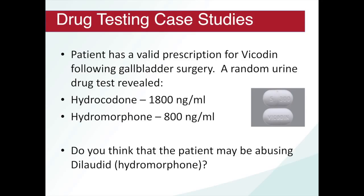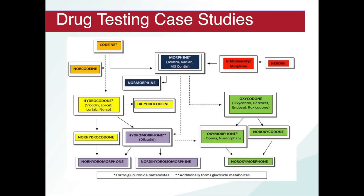Here's a case in point: a prescription for Vicodin was given to a patient following gallbladder surgery. The patient underwent a random test sent for confirmation, which shows hydrocodone and hydromorphone in the urine. Do you think the patient might be abusing Dilaudid (hydromorphone) since you prescribed Vicodin (hydrocodone)? When we look at the metabolic pathway for hydrocodone, we can see that hydrocodone is metabolized into hydromorphone — so in this case, the patient wasn't abusing Dilaudid; it was simply a normal metabolite.